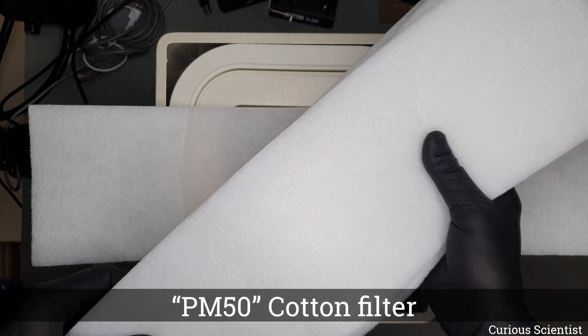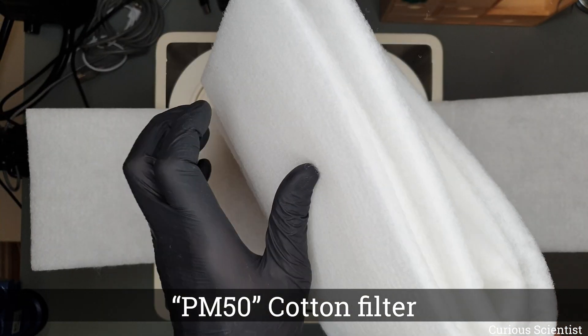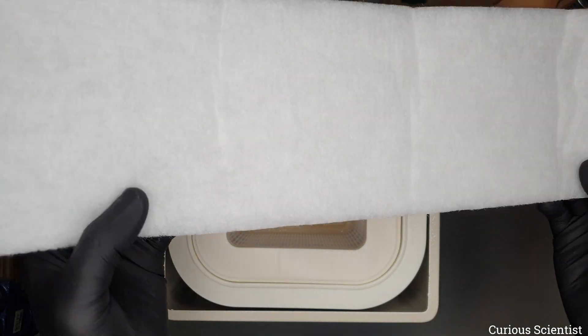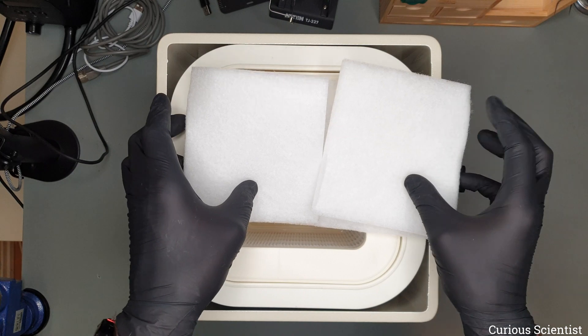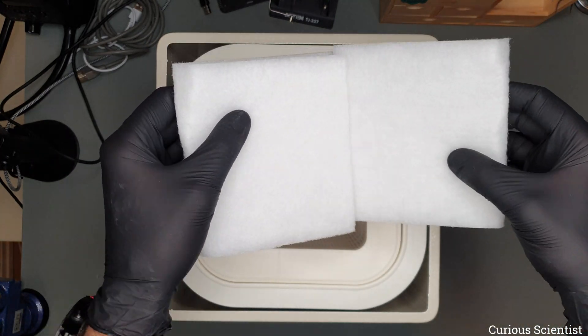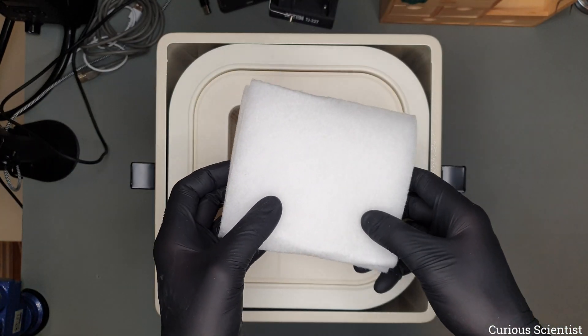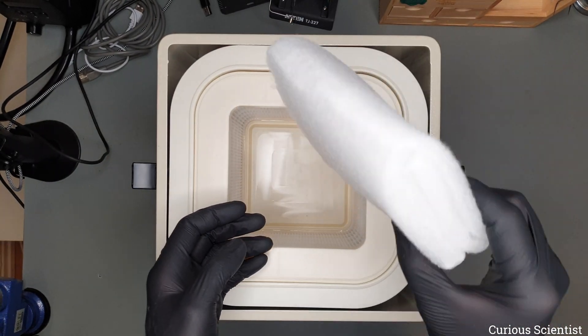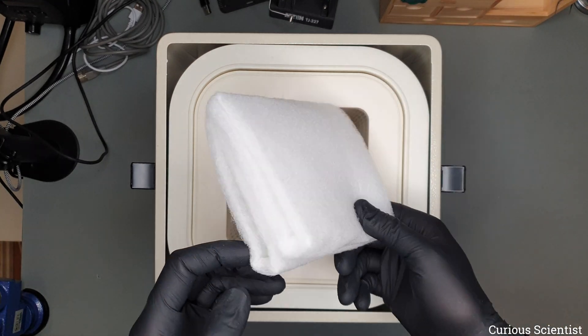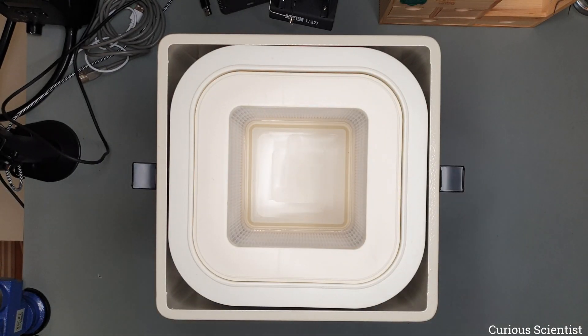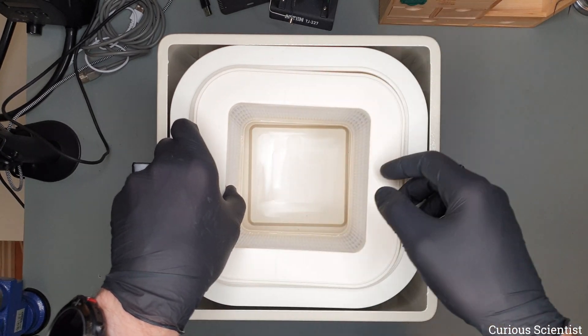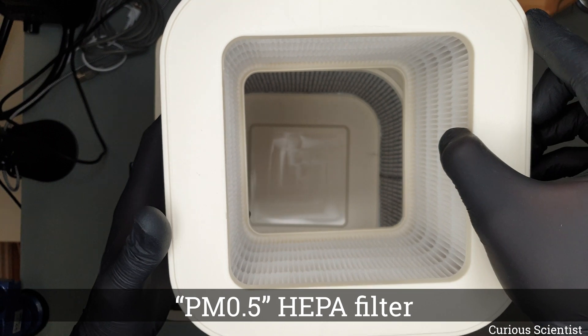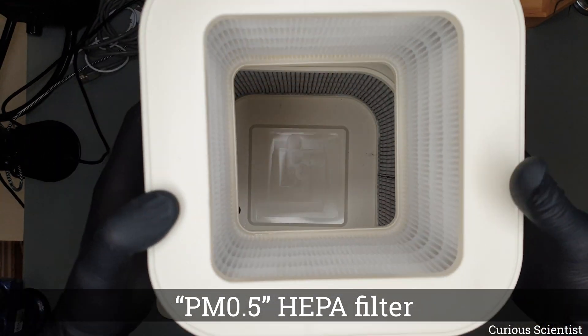This is nothing else but just a trap for particles. So if some bigger dust particle or whatever particle enters the filter, then they will be trapped in this. Then in this concentric arrangement, this is the next part. You can see that this is another set of filter.